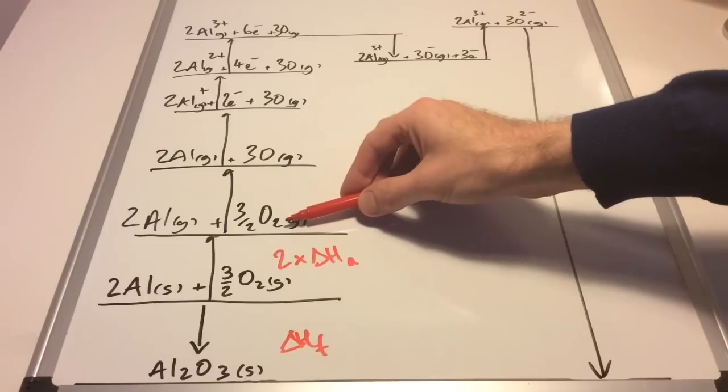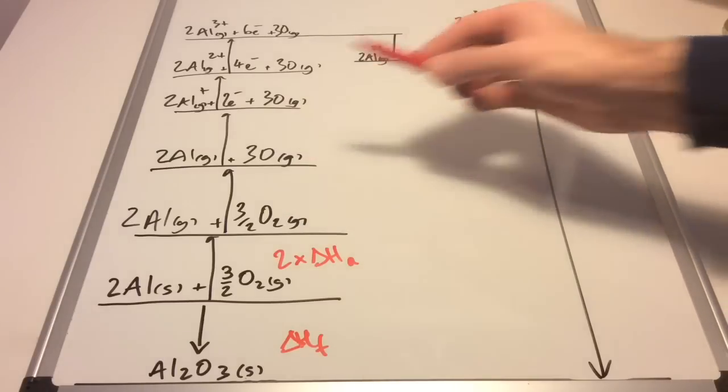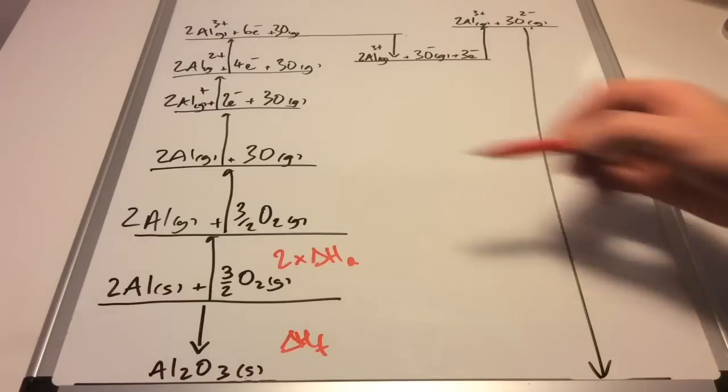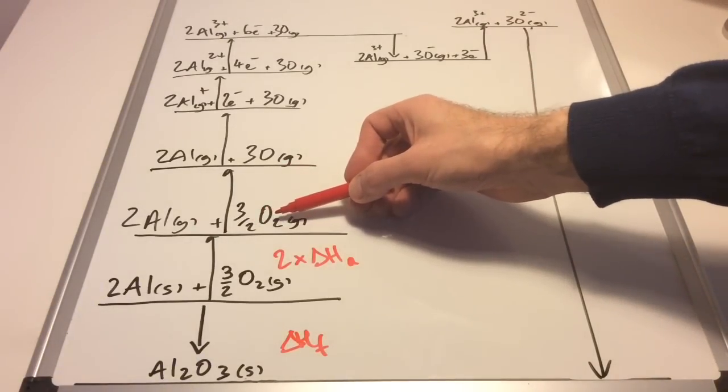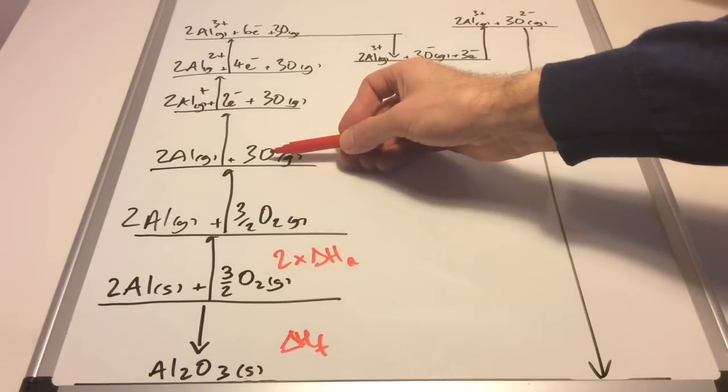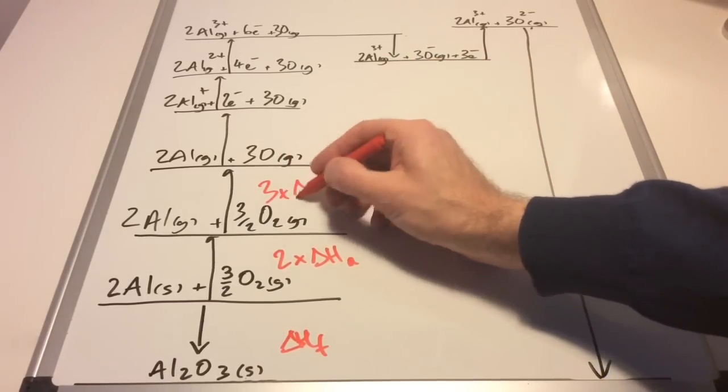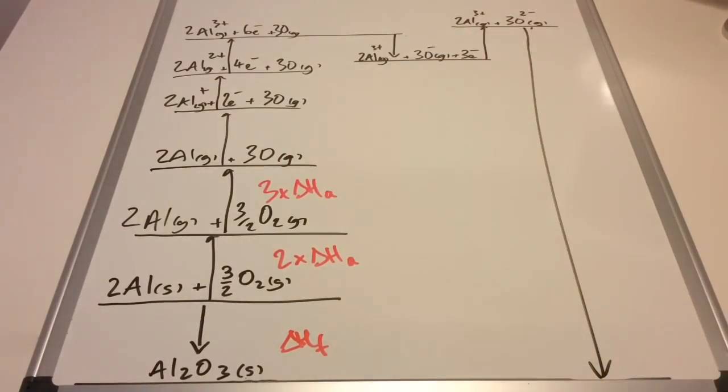Tricky one now, we've got this process here where O₂ is being atomized into O. If you remember, the process on the other side of the board would be a half O₂ going to O gas. We've got three times that, so that's three times the enthalpy change of atomization for oxygen.